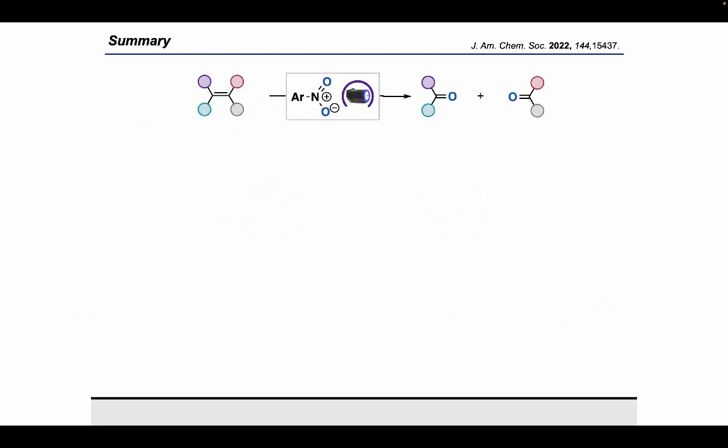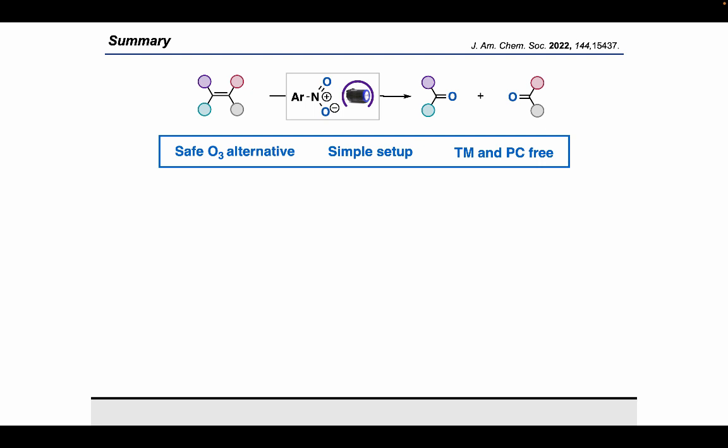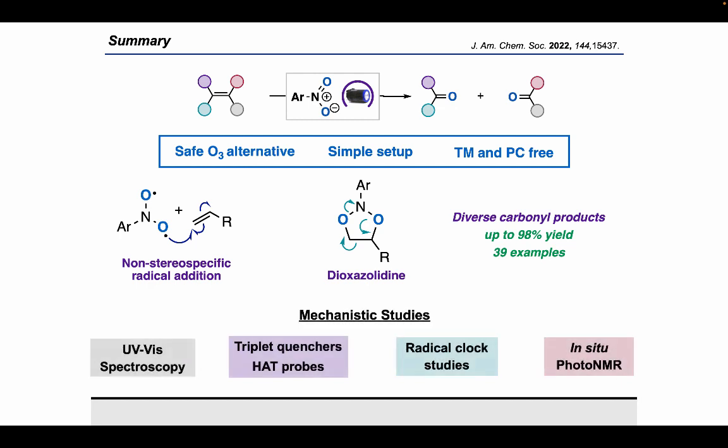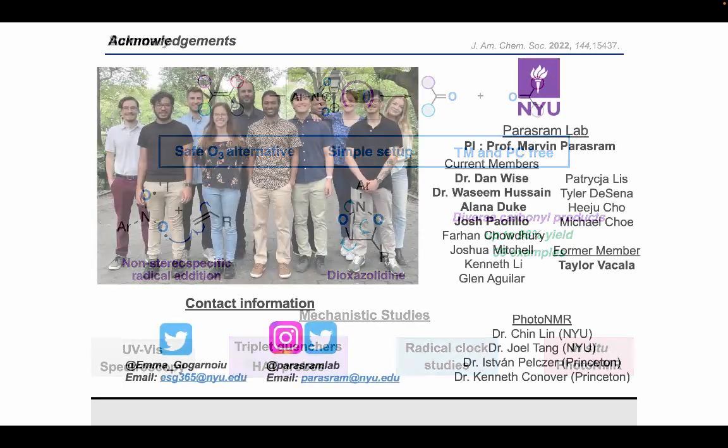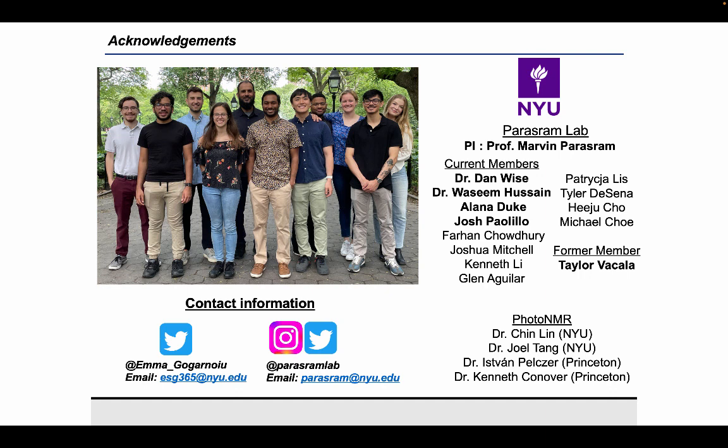In summary, we were able to develop a safe, simple, and scalable alternative to ozonolysis without use of transition metals or photocatalysts. Our method occurs through a non-stereospecific radical addition to an alkene, resulting in the formation of a dioxazolidine species that then undergoes a polar fragmentation to eventually give us our carbonyl products. We were able to support this mechanistic proposal with the various studies shown in this talk, as well as others that I did not have time to mention. And with that, I would like to thank you for watching this video, and thank you, Matt, for inviting me to be featured on today's workshop. I want to thank my PI, Marvin Parasram, as well as the other co-first author on this paper with me, Dan Weiss, and the other authors, Wasim Hussain, Alana Duke, Josh Palillo, and Taylor Bacala. If anyone has questions, feel free to reach out by email. And once again, thank you very much for watching.